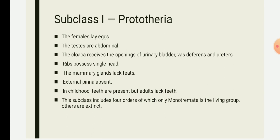Mammary glands are without nipples and there is no corpus callosum in the brain. The cochlea is a simple process in the form of a sacculus without coiling. Testes are abdominally placed. Females are oviparous. Members of Prototheria are mostly found in Australia, New Guinea, and Tasmania. This subclass includes four orders, out of which only one, Monotremata, is the living group; the others are extinct.